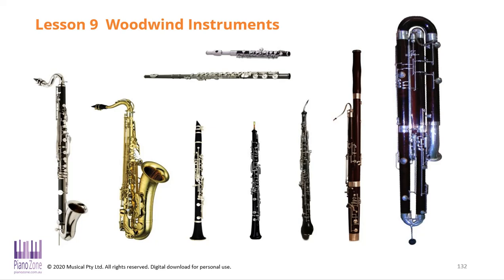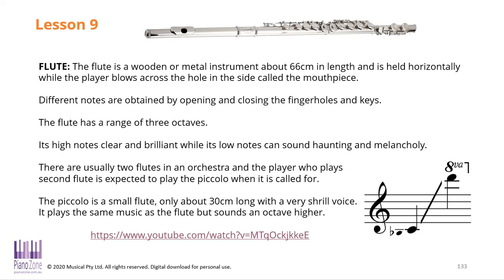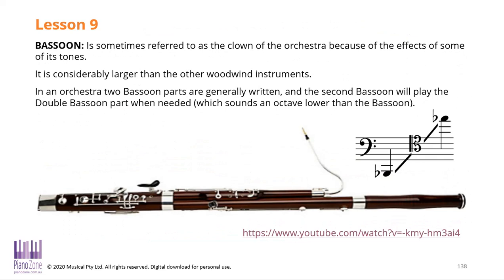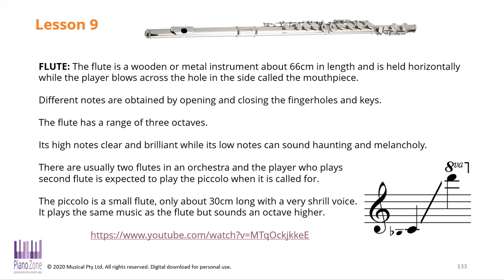Today we're talking about woodwind instruments in the orchestra. There are quite a few different types depending on the size and the sound, and they come in three types: those that have single reeds, double reeds, or no reeds at all. They fall into four basic categories — the flute, the clarinet, the oboe, and the bassoon — those are the four main ones.